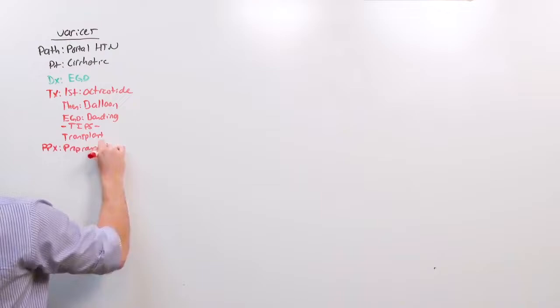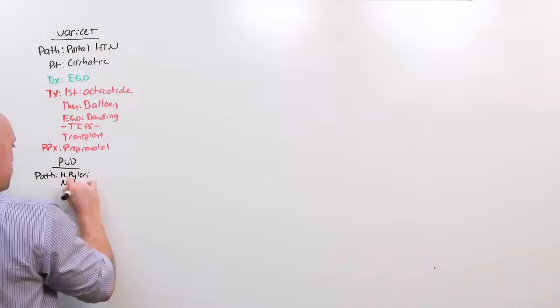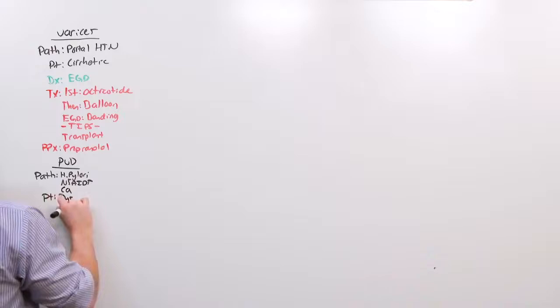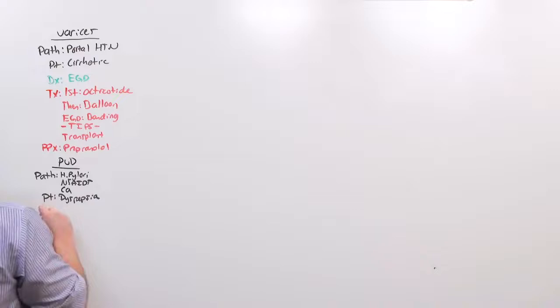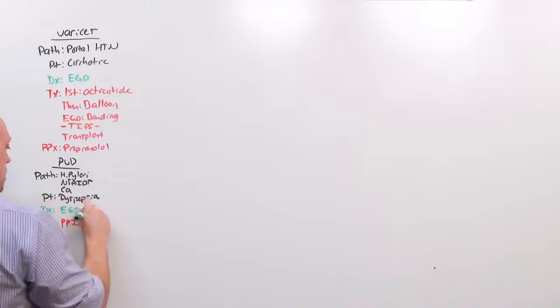We have an entire lecture on peptic ulcer disease. The pathology that you should be considering is H. pylori, NSAIDs, and cancer. The patient will present with dyspepsia and a GI bleed. The diagnosis is made on endoscopy. The treatment is going to be etiology specific, but everyone benefits from a PPI. The EGD with biopsy allows you to differentiate which of the ulcers it is.